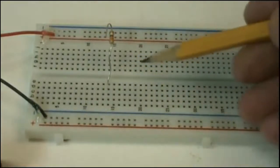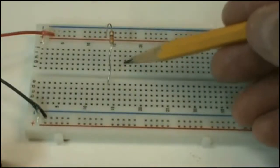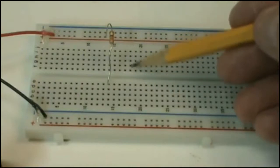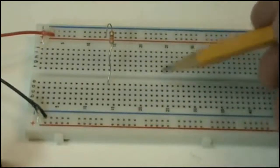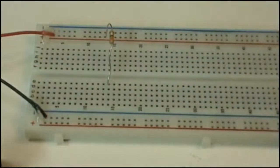This gap means that there's no connection between these sets of holes on the top and these sets of holes in the bottom, and that's so you can get an integrated circuit on there and not short the integrated circuit leads out.